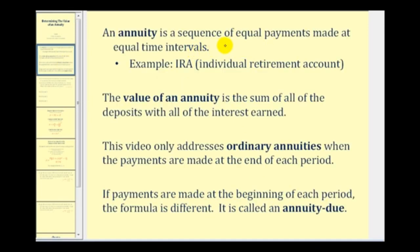An annuity is a sequence of equal payments made at equal time intervals. For example, an IRA, or individual retirement account, is an account where you may make deposits on a monthly basis in order to accumulate enough money to retire on.